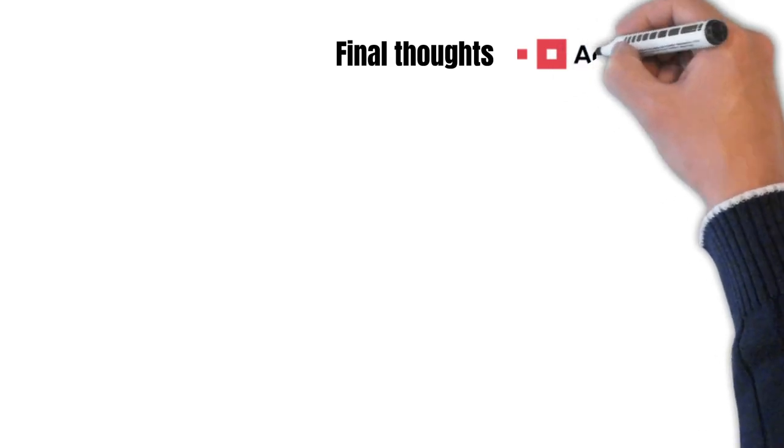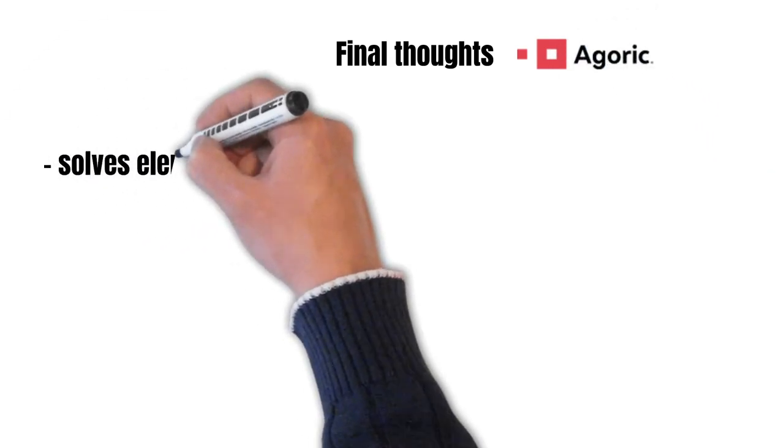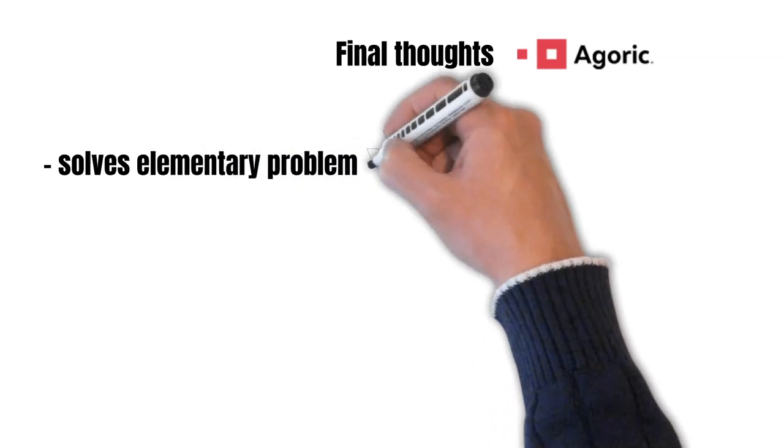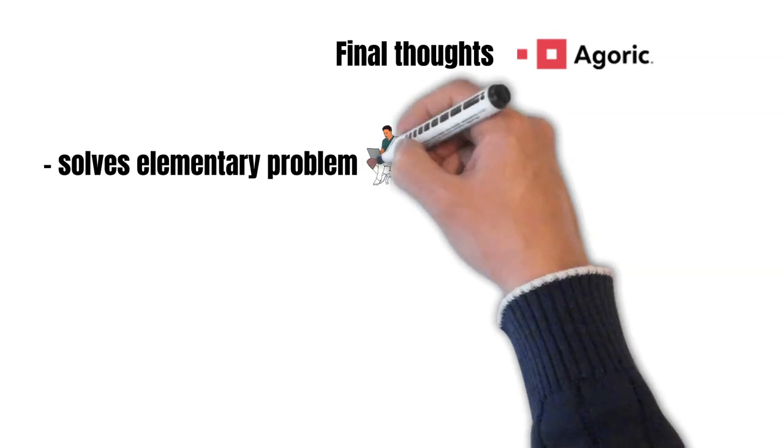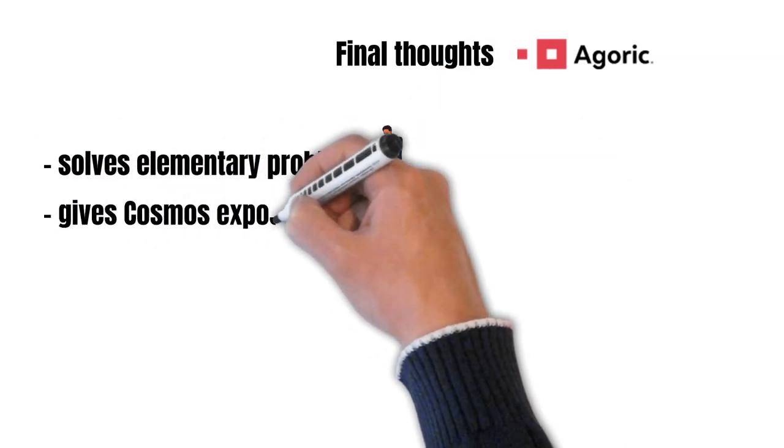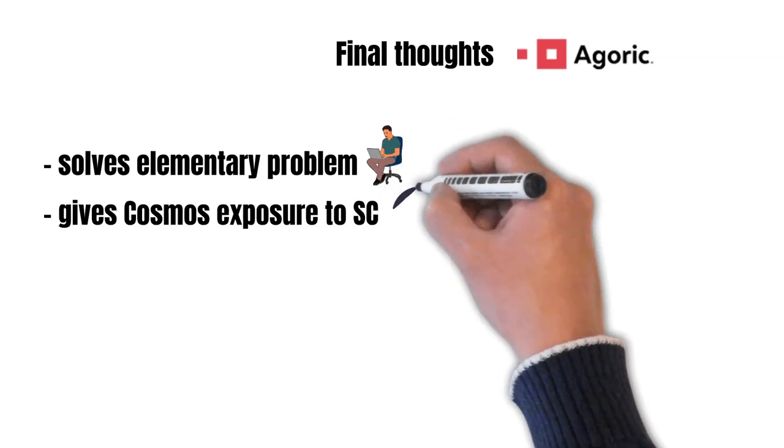This is why we will also add BLD into our portfolios. The reasons for that are, by allowing programmers to build smart contracts also with JavaScript, Agoric solves an elementary problem. Not only in the Cosmos ecosystem, but in the whole Web3 space.